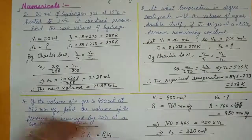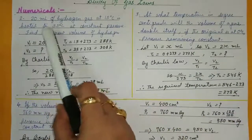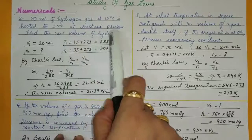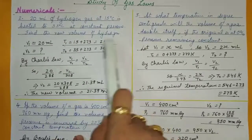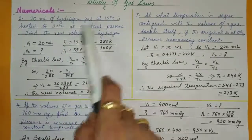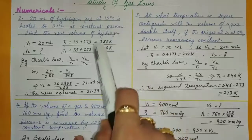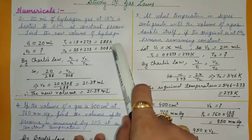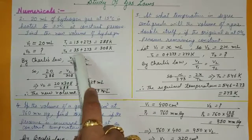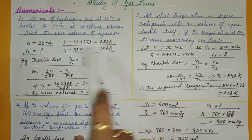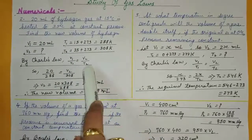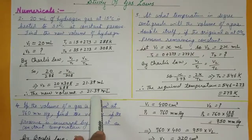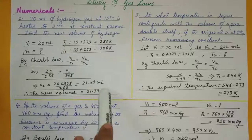Question 2: 20 ml of hydrogen gas at 15°C is heated to 35°C at constant pressure. Find the new volume. Given: V₁ = 20 ml, T₁ = 15°C = 288 K. We must convert Celsius to Kelvin by adding 273. T₂ = 35 + 273 = 308 K. By Charles' law: V₁/T₁ = V₂/T₂. Substituting and calculating, V₂ = 21.39 ml.